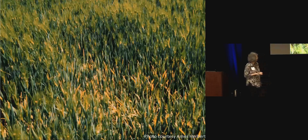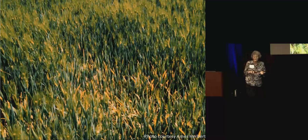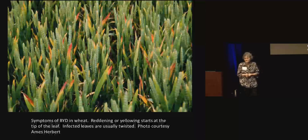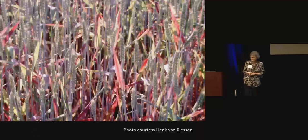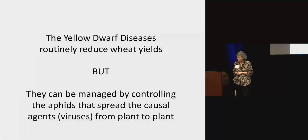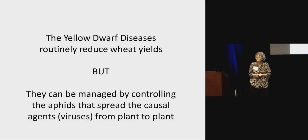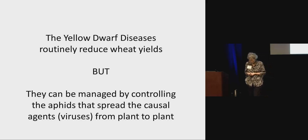You can see from here the yellow dwarf symptom — the yellowing of the leaves, especially the upper leaves. Sometimes the leaves turn red, depending on the variety of wheat you have. Here's another one where it's turned red. So as I said, these yellow dwarf diseases routinely reduce wheat yield, but we can manage them.